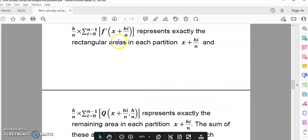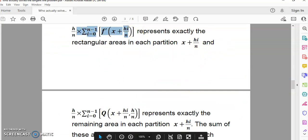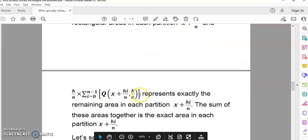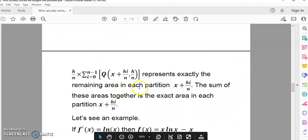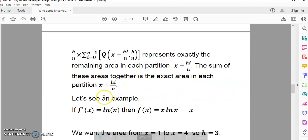In any case, this summation represents the rectangular areas or the green areas that you saw in this applet. And this represents the remaining areas in orange in the applet. So, the sum of these together is the exact area.